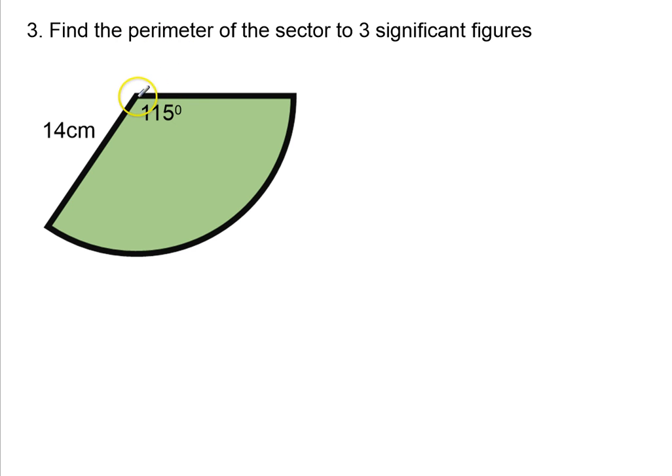So to find the perimeter is the distance all the way around. If that here is 14 cm, this is also a radius, so this here is also going to be 14 cm, so it's important to recognize that there.